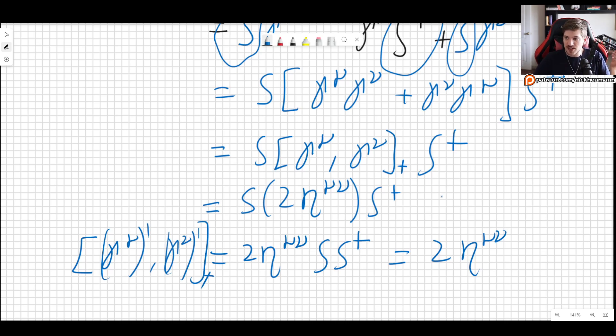So what this means is that even if you use a different representation, it's still valid. You still get the Clifford algebra, and that's all that matters. So you can use any representation that you want. The Clifford algebra still holds, which means that all the conclusions that come from it still hold.